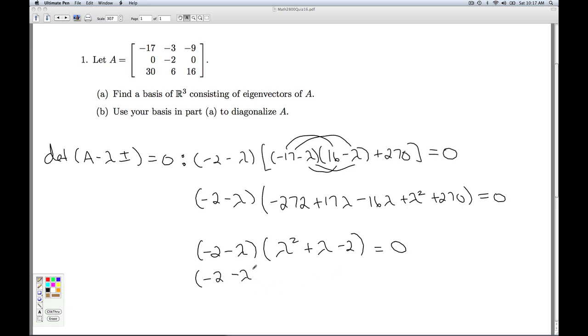So I get negative two minus lambda times I've got a lambda squared plus lambda minus two equal to zero. And so this factors nicely for me. So when I identify my eigenvalues, what do I get? From here I get lambda equals negative two. From here I get lambda equals negative two. From here I get lambda equals one.